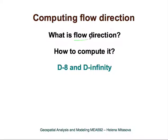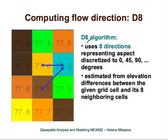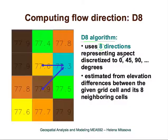What is flow direction? We already said that flow lines follow gradient direction, so the flow direction will be the gradient direction. There are several ways to compute gradient. Here we will talk about two different methods used specifically for flow tracing. The simplest method is the D8 algorithm, which uses only eight directions — meaning aspect or gradient direction is discretized to eight directions only: 0, 45, 90 degrees.